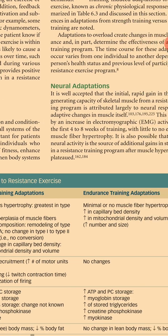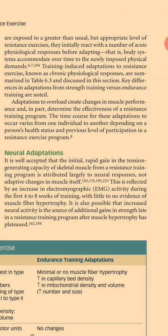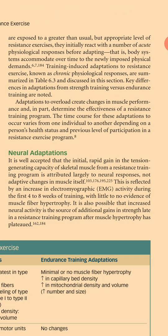When body systems are exposed to a greater than usual but appropriate level of resistance exercise, they initially react with a number of acute physiological responses before adapting. Body systems accommodate over time to the newly imposed physical demands. Training-induced adaptations to resistance exercise, known as chronic physiological responses, are summarized in table 6.3 and discussed in this section.